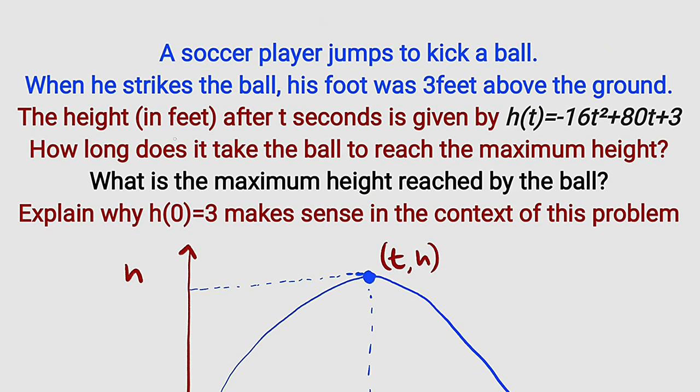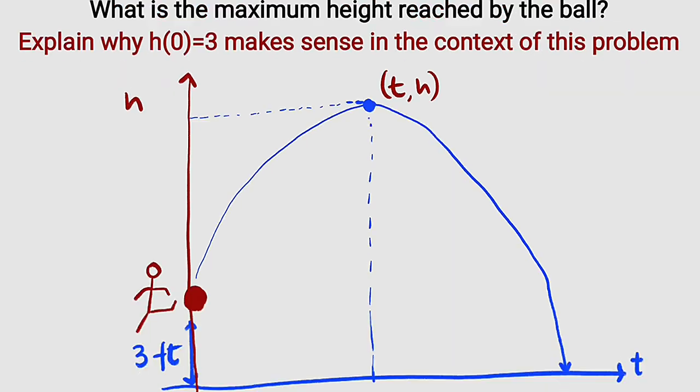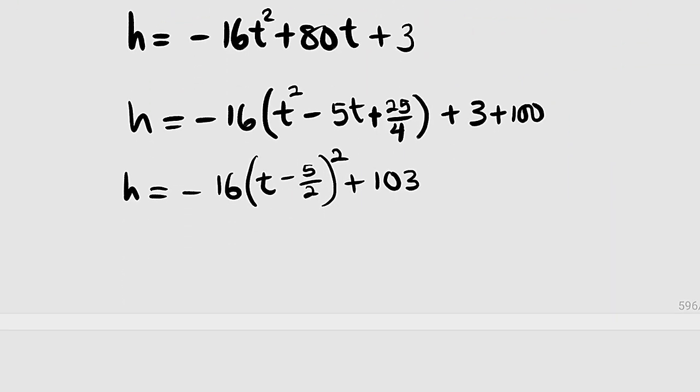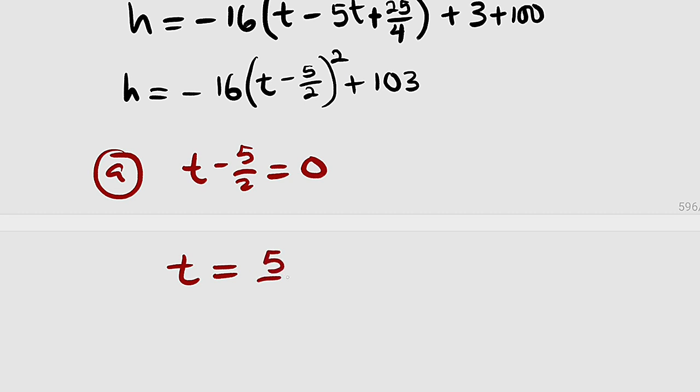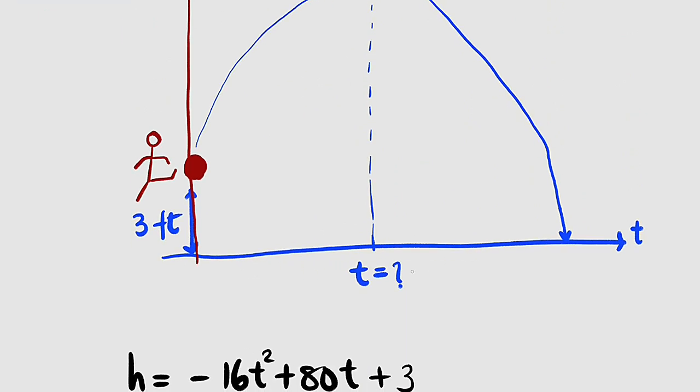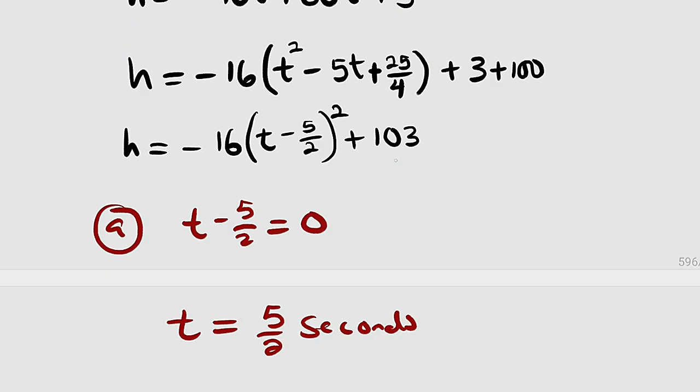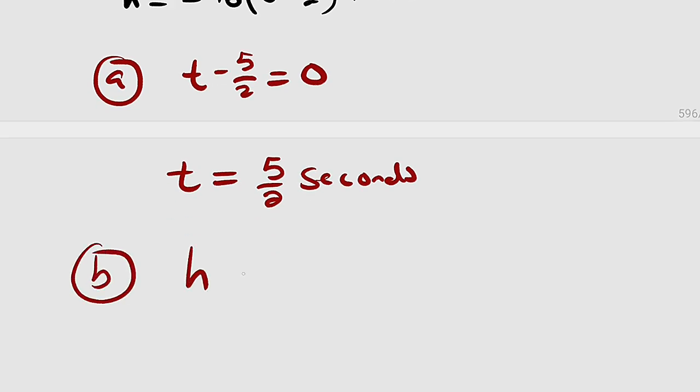Let's start with the first question. We are asked to find the time taken for the ball to reach the maximum height. You take t - 5/2 and set it equal to 0. So t = 5/2 seconds. This is the time taken for the ball to reach the maximum height. Then the corresponding value of h will be 103, which is the maximum height that ball will ever reach. So for part B, h = 103 feet.